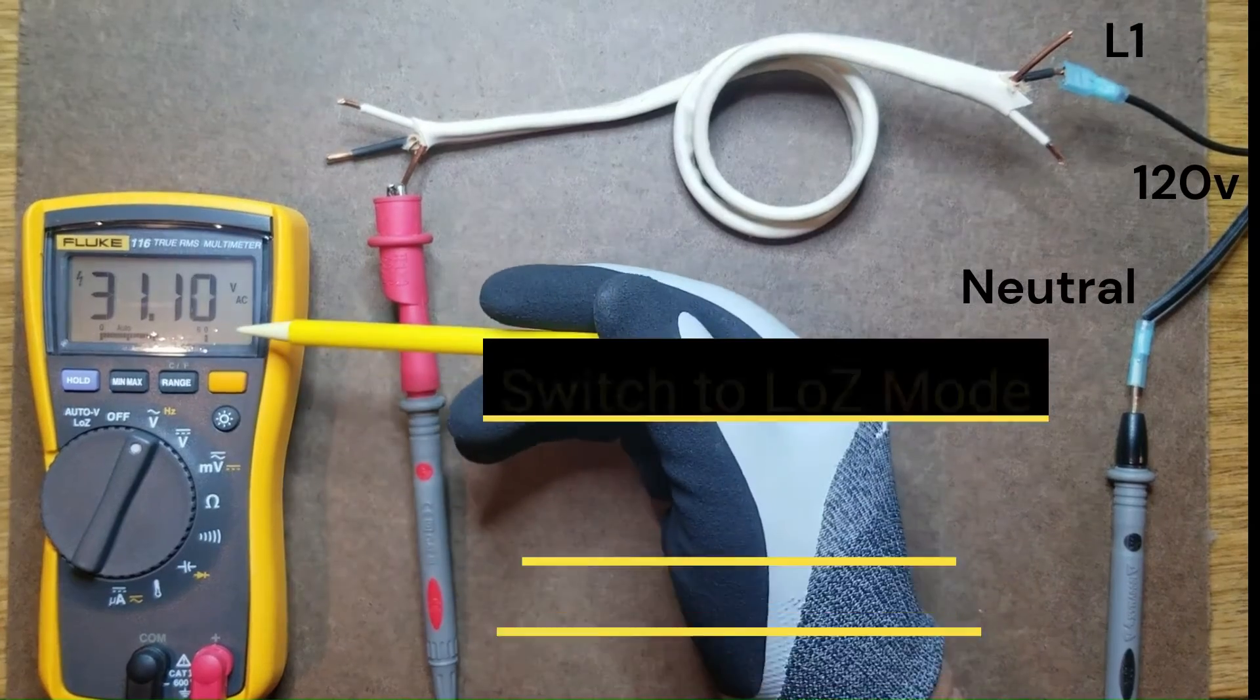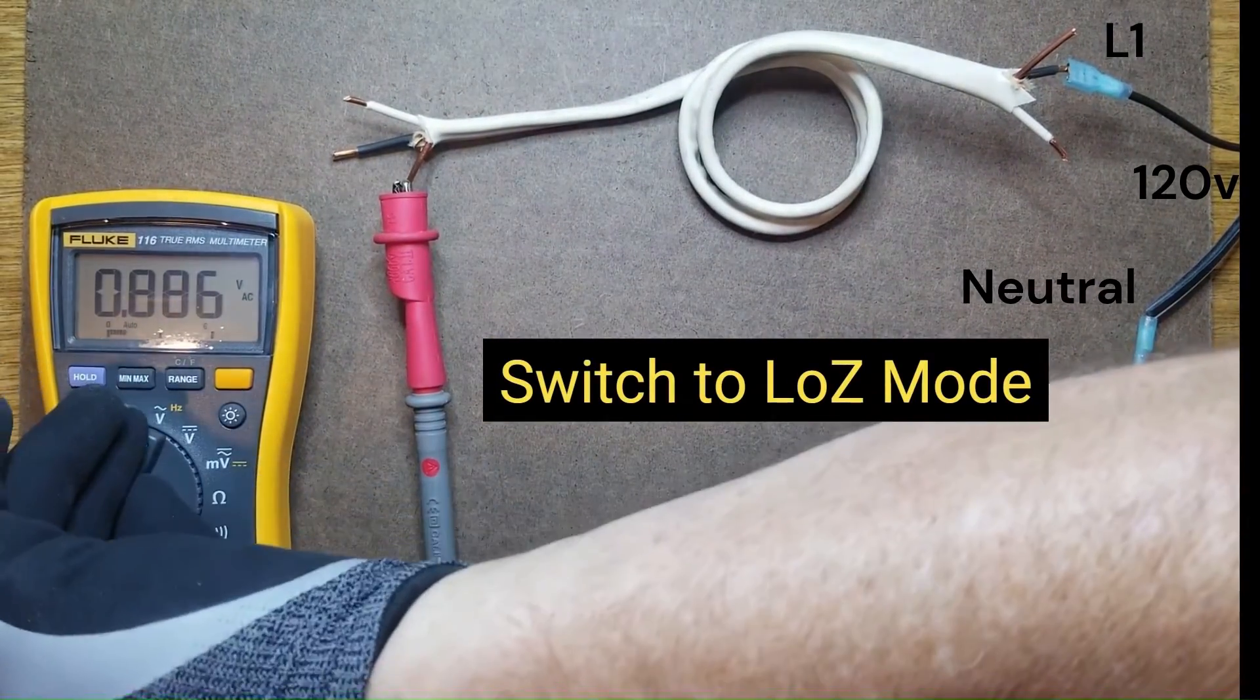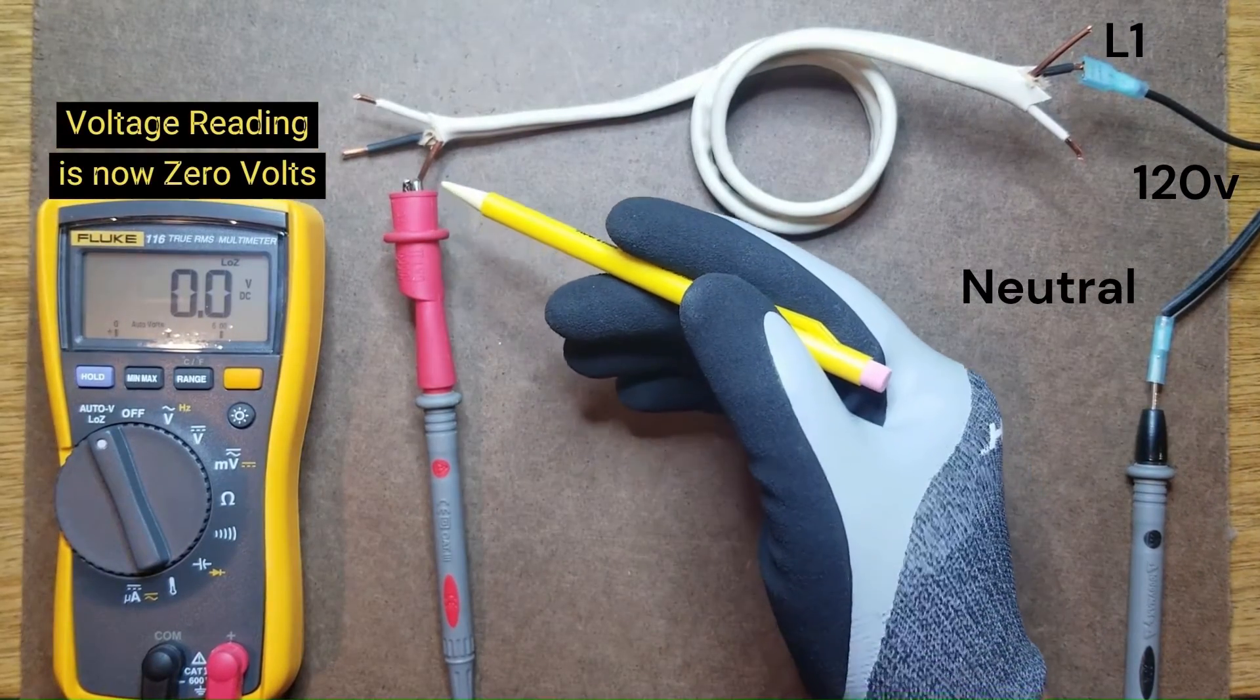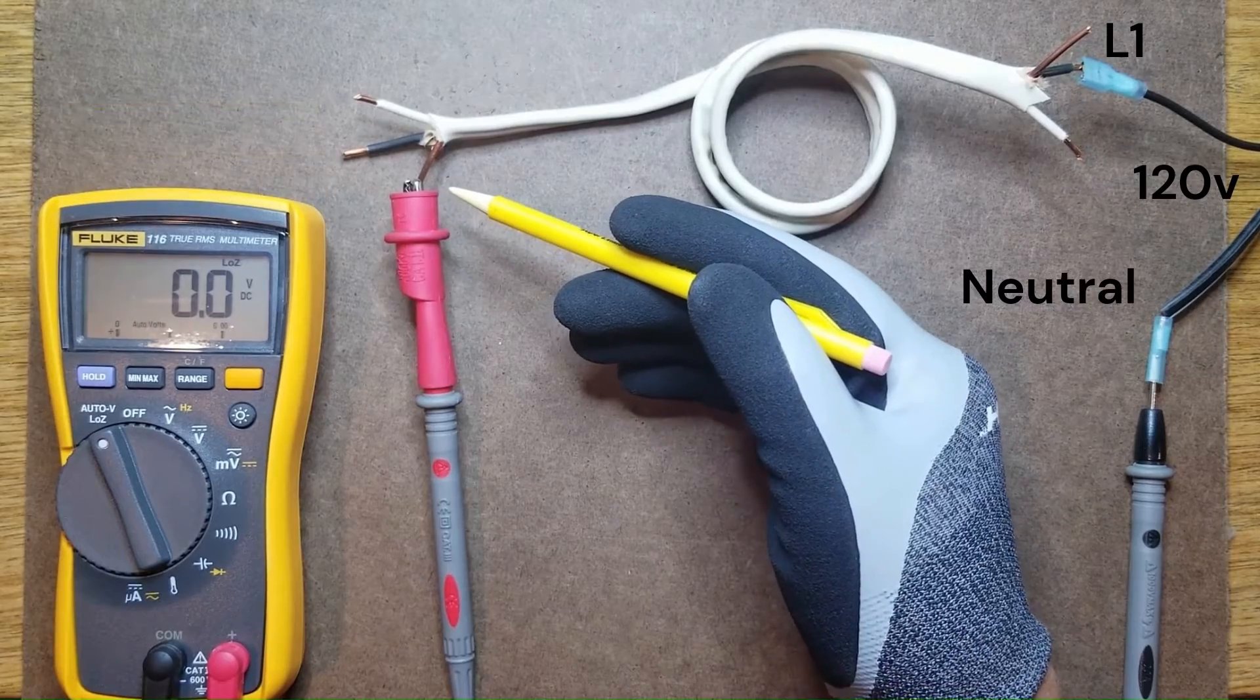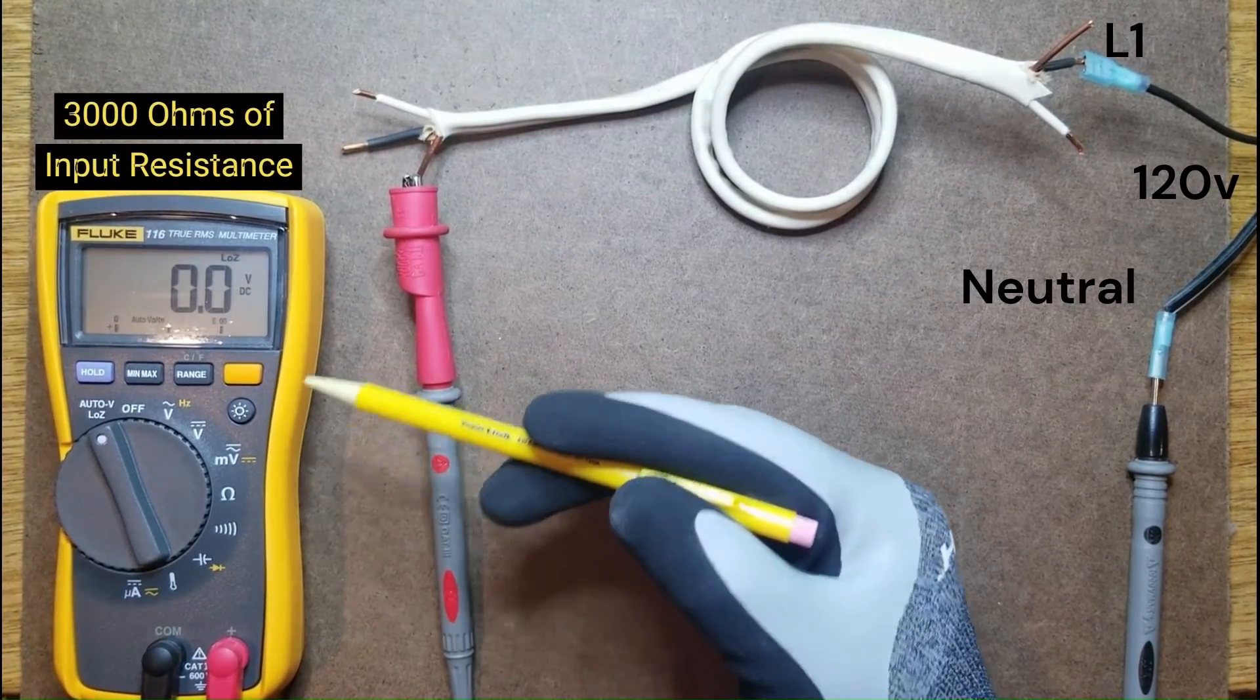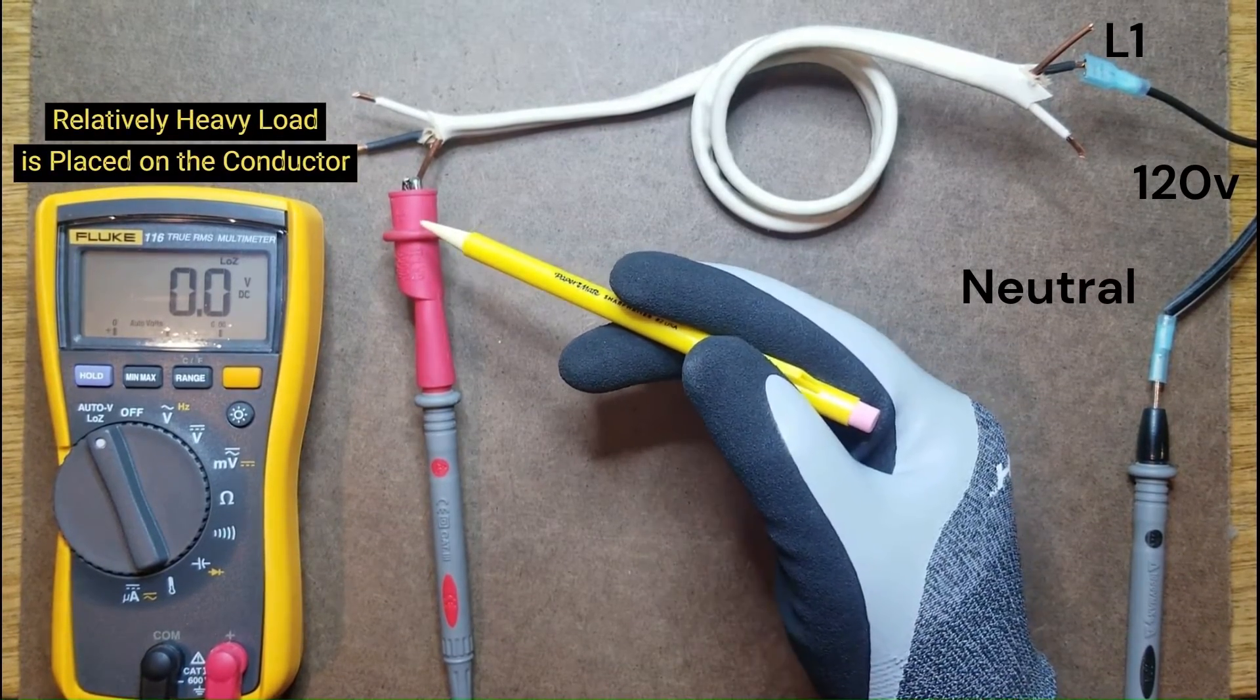Now if we switch to low Z mode, you'll notice that the voltage reading is now zero because we're using low Z mode which has an input resistance of just over 3000 ohms. A relatively heavy load is placed on the ghost voltage and it disappears.